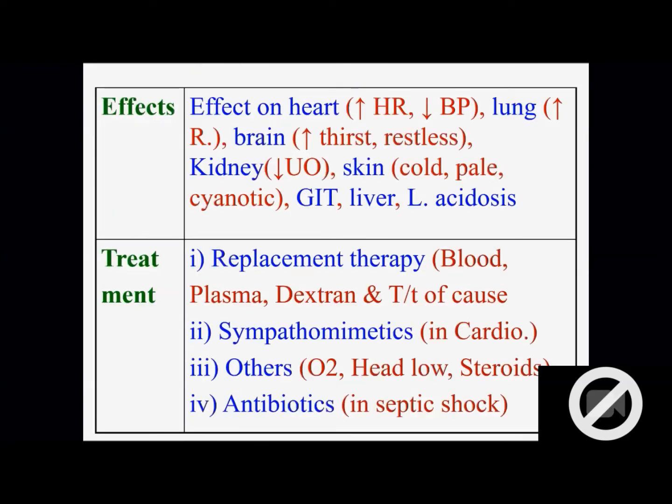So we are having clinical features like this: heart level - increased heart rate, decreased blood pressure. Lungs level - increased respiration. Brain level - patient will be restless, increased thirst. Kidney level - decreased urine output. Skin will be cold, pale and cyanotic. And ultimately GIT, liver, lung, everywhere necrosis starts. So liver related problem, GIT related problem, throughout the body necrosis will start. So it may be 4-5 clinical features.